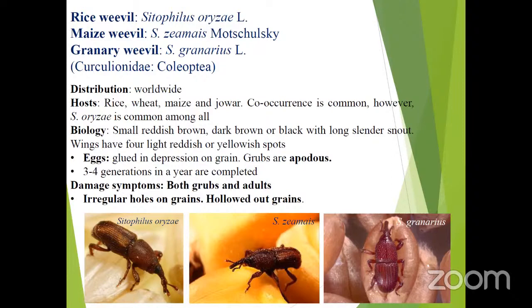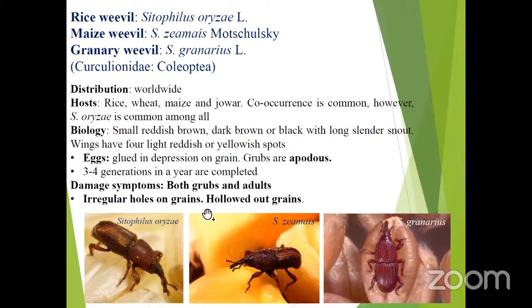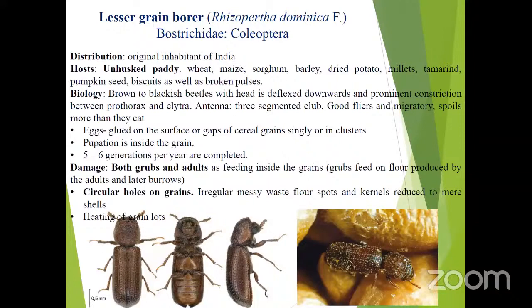Starting with rice weevil, Sitophilus oryzae — there are other two species to remember. For maize weevil it is Sitophilus zeamais, and granary weevil is Sitophilus granarius. Important points: the grubs of this insect are apodous. Both grubs and adults are damaging stages. The typical symptom is irregular holes on the grains and hollowed-out grains — the entire internal content is fed and only the outer pericarp remains intact, making grains hollow. If you touch them, they just squeeze like a balloon.